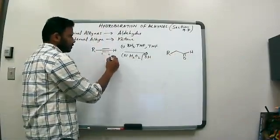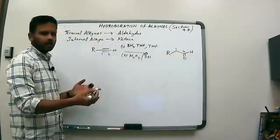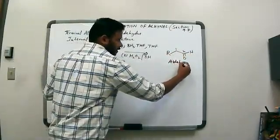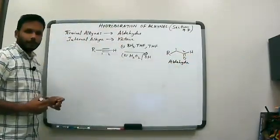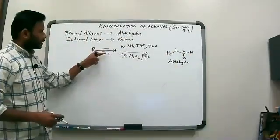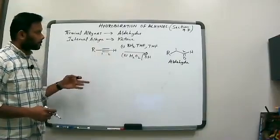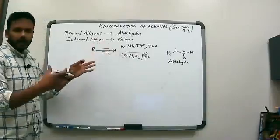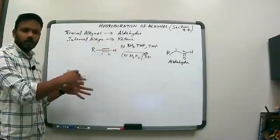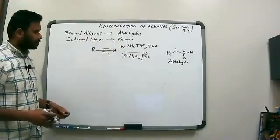We have one carbon, two carbons — this is our first carbon, this is our second carbon beyond R. Our product here is an aldehyde. Now, because an alkyne has two pi bonds, in principle you could add the borane twice to the alkyne — once and then another time — and we're going to see that during the mechanism.